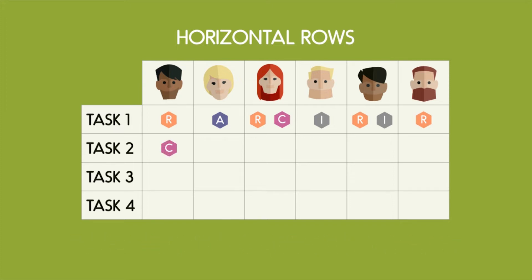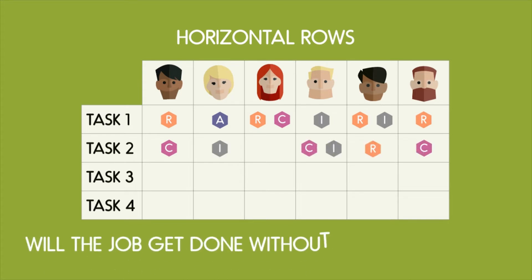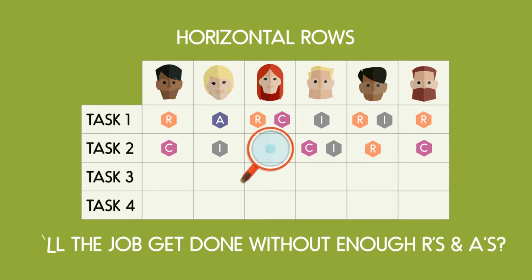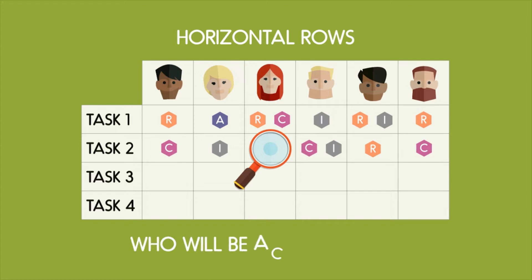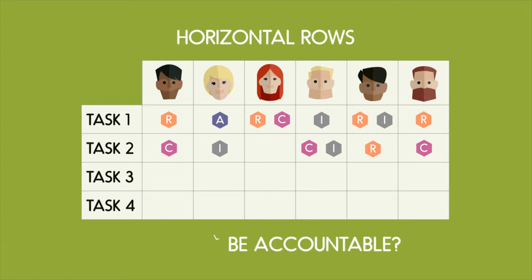On the opposite side of the spectrum, if there are not a sufficient amount of Rs and As on a horizontal line, does this mean that the job is getting done? Who will carry out the task, and who is ultimately accountable for its delivery?